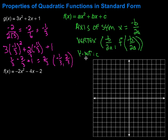We can also find the y-intercept, which is our c — the constant term in the equation. In our example, the y-intercept is at 1. So let's go ahead and use these values to graph the parabola.